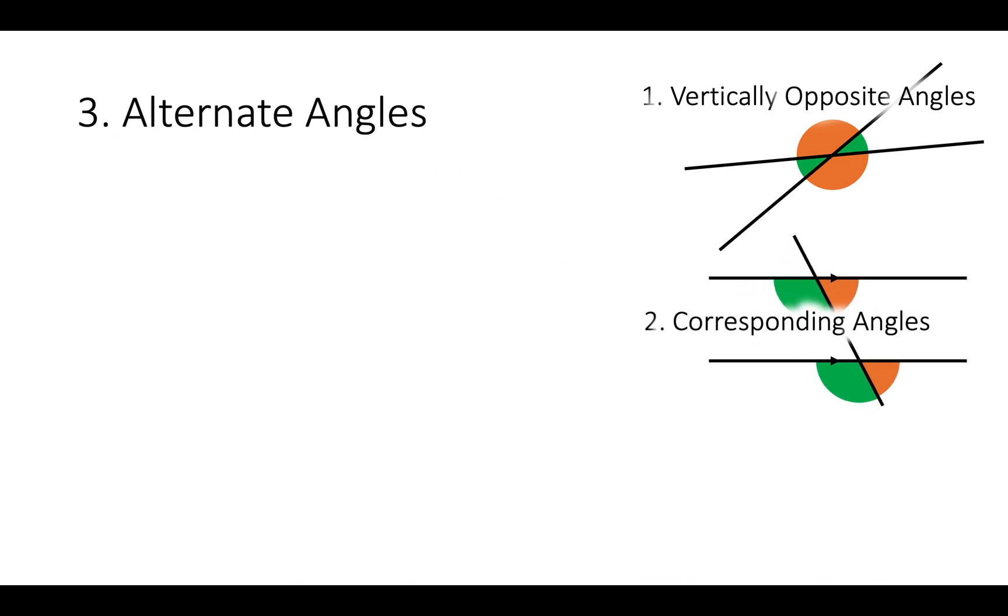Finally, we have alternate angles like this. Two parallel lines and a line crossing. These two angles will be the same as well. Again, they're the same. Doesn't matter what angle they're at. Or over here. Just like that. Those are alternate angles and they will always be the same size.